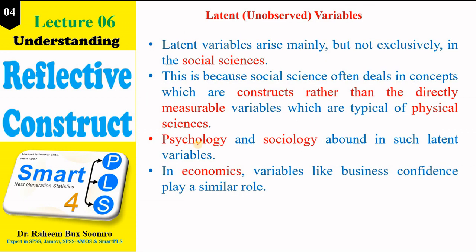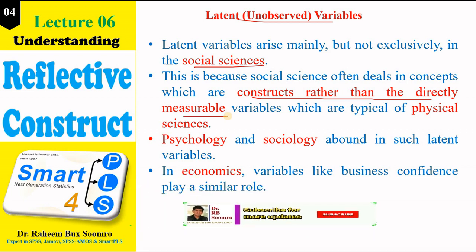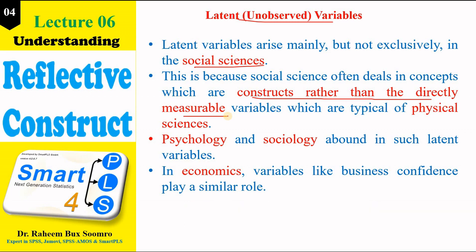Now we talk about the latent variable. A latent variable is an unobserved variable. We are mainly working with latent variables in the social sciences. These are constructs that are not directly measurable. Latent variables are those types of variables which you cannot directly measure, so we have to take help from a set of items, which is why whenever we are collecting data we require questions.